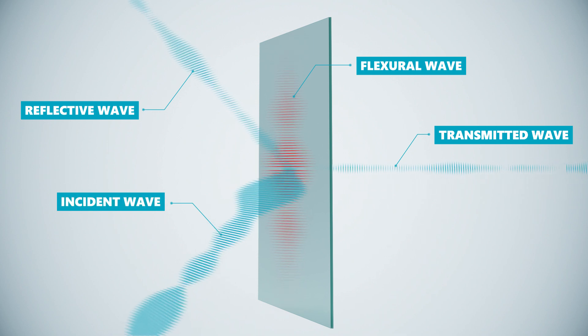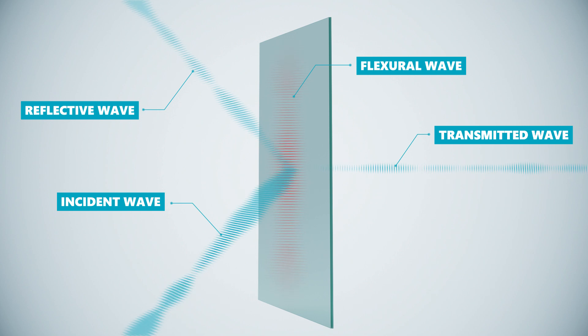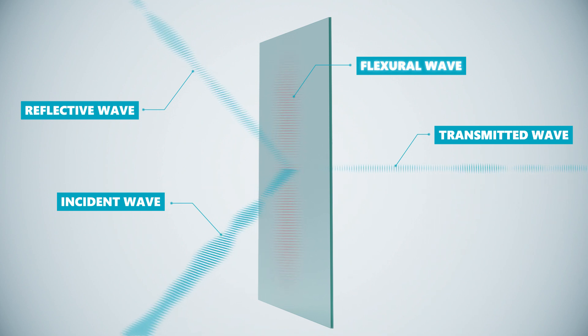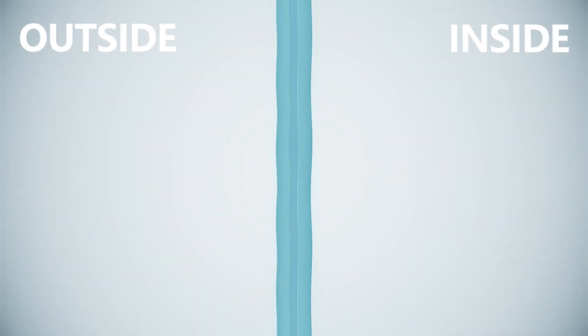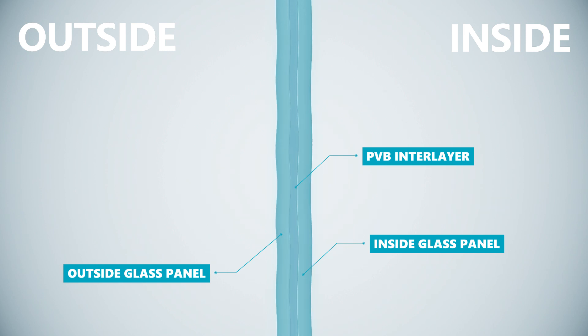When incident sound waves hit the glass panel, they are either reflected, transmitted, or dissipated across the panel in what is called flexural wave. The tri-layer PVB works by allowing the two panes of glass to move independently from one another when impacted by a sound wave in a process known as decoupling.